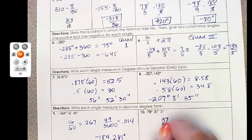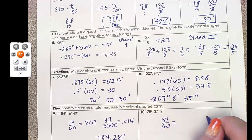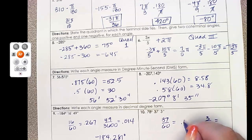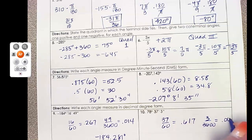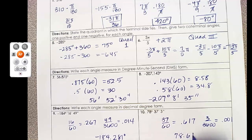Same thing here, 37 over 60, 3 over 3,600. When you add those together, we get 78.618 degrees.